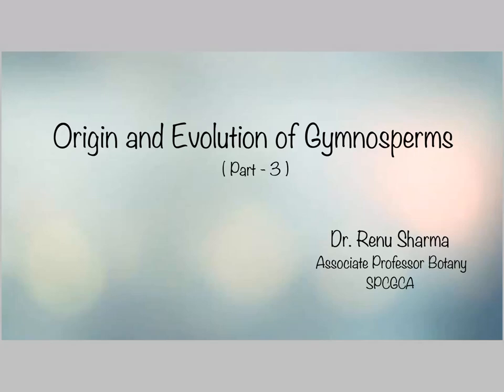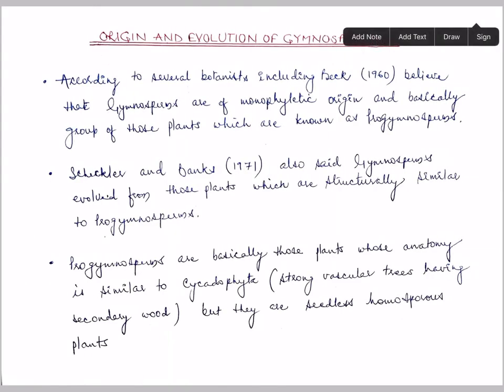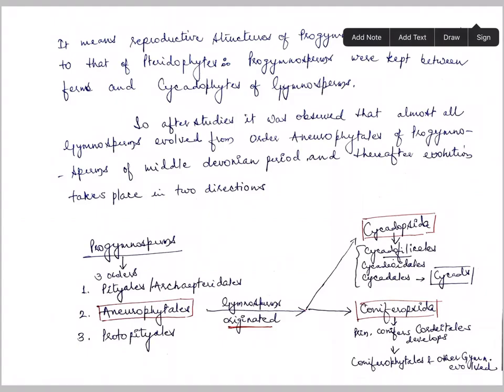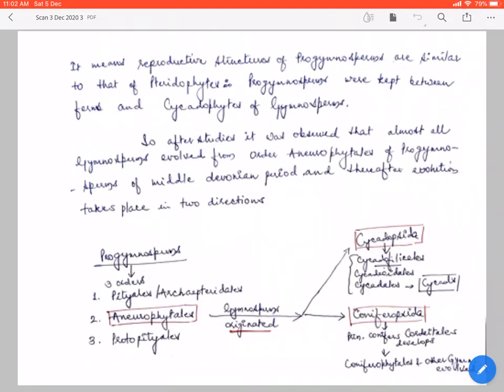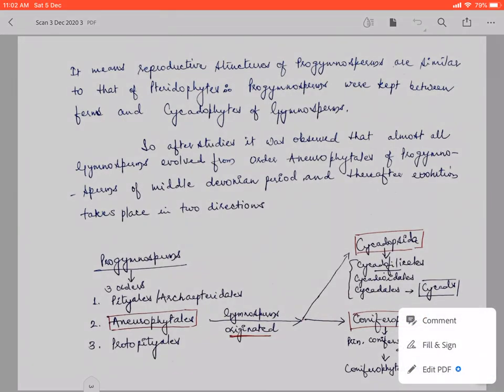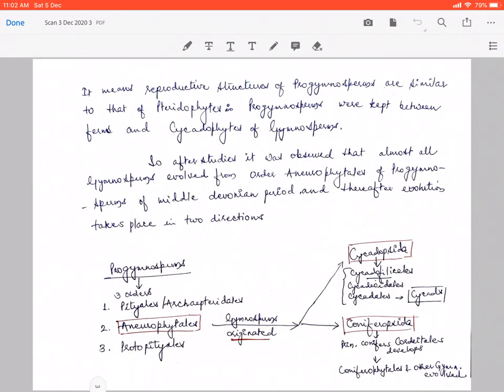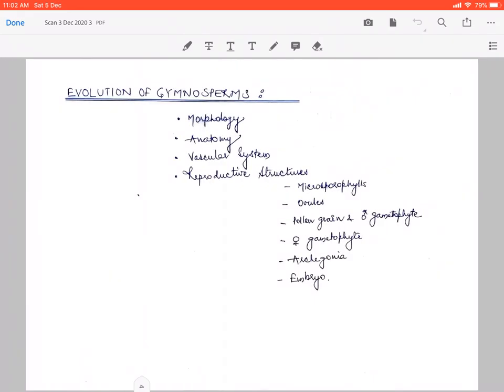Welcome students. Today in the third part of origin and evolution of gymnosperms, we will continue discussing evolutionary trends of gymnosperms, especially in reproductive structures. In our first part, we discussed that the origin of gymnosperms is from pro-gymnosperms, and the order of pro-gymnosperms is called aneurophytes. After that, we talked about the evolutionary trends.